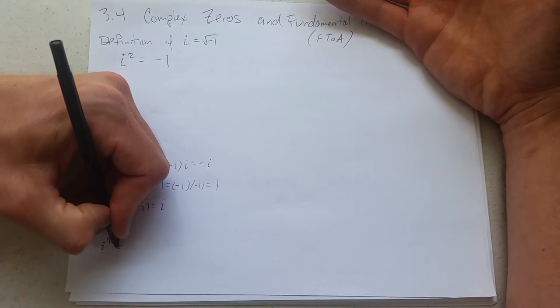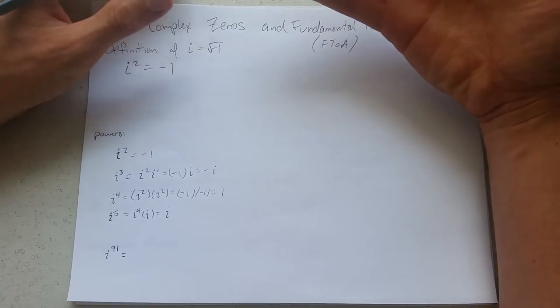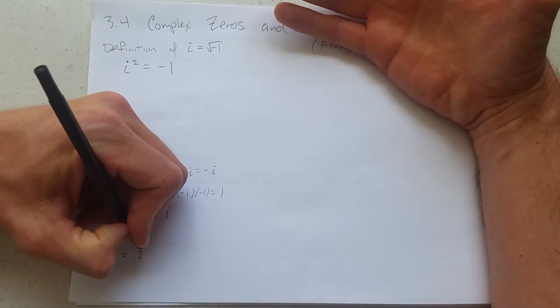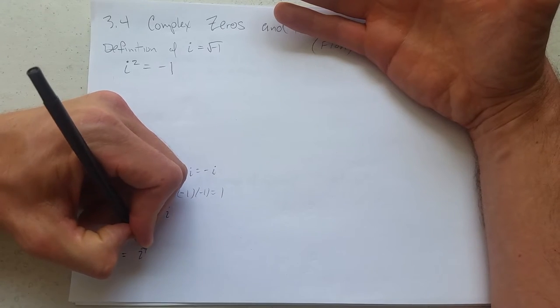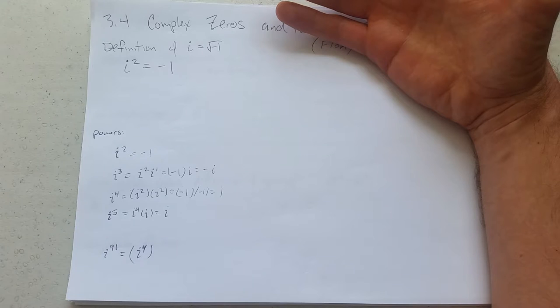Now you could go and do really high powers, like 91. You want to pull out as many i to the fourths as you can. And then the question is, how many are left over? That is a good question.